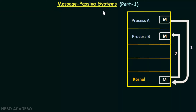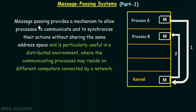We have seen a brief introduction about message passing systems when we discussed the lecture on inter-process communication. In this lecture we will be studying in more detail about how message passing systems actually work. Message passing provides a mechanism to allow processes to communicate and synchronize their actions without sharing the same address space, and is particularly useful in a distributed environment where communicating processes may reside on different computers connected by a network.